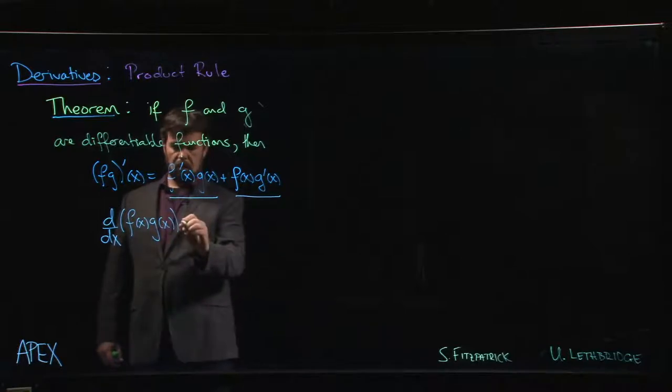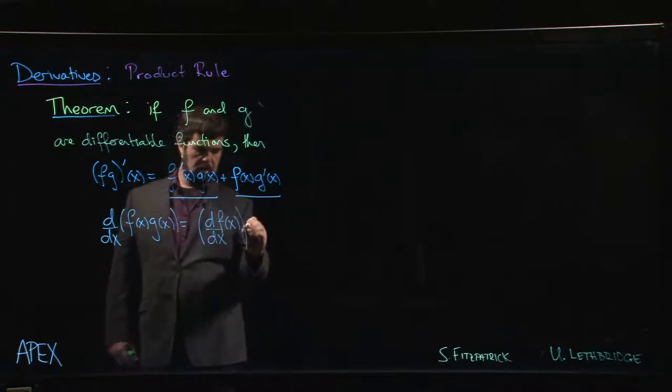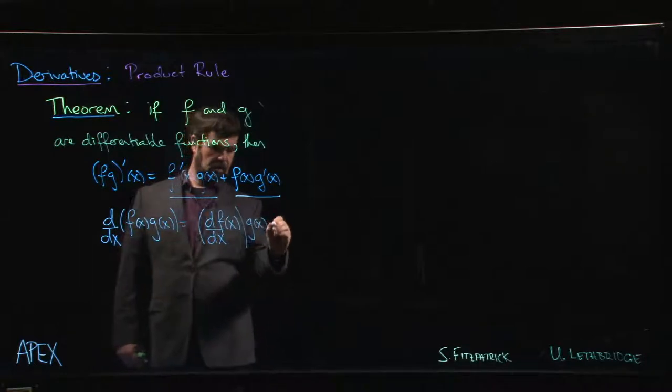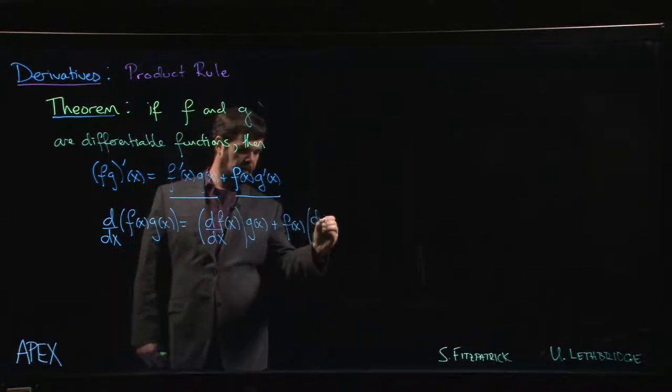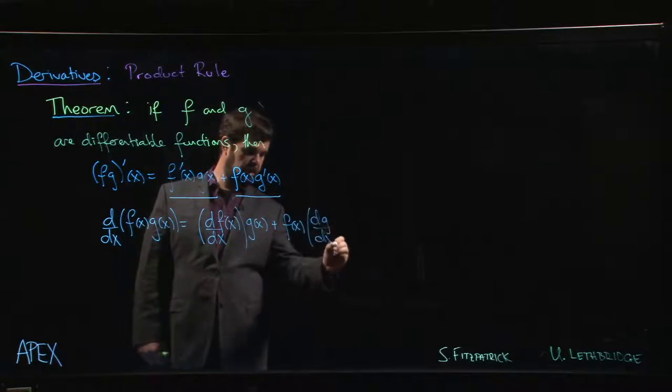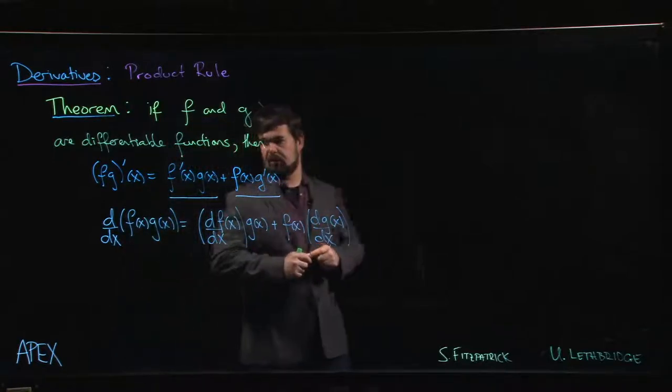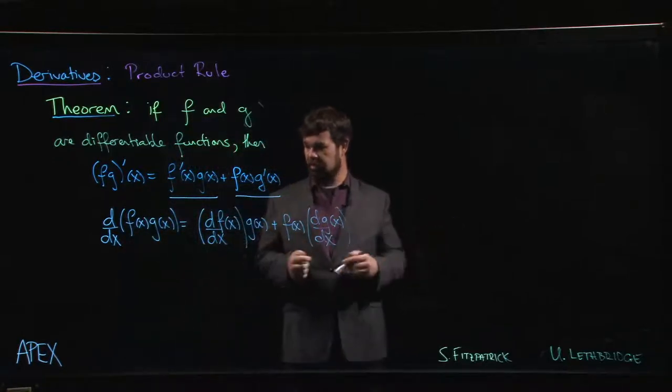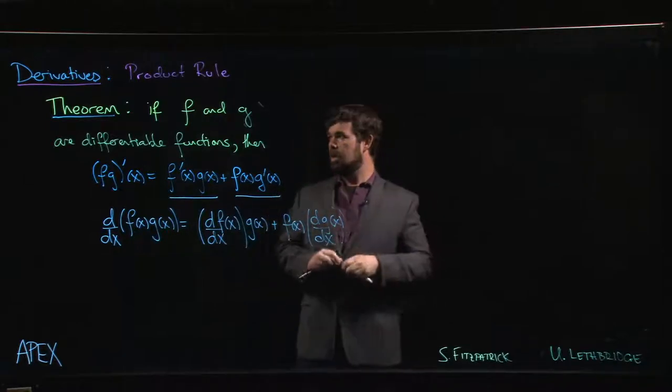If we want to use Leibniz notation all the way through, we have df/dx times g(x) plus f(x) times dg/dx. You can use either version of the product rule formula or some combination of the two. This means that we can now take care of derivatives.